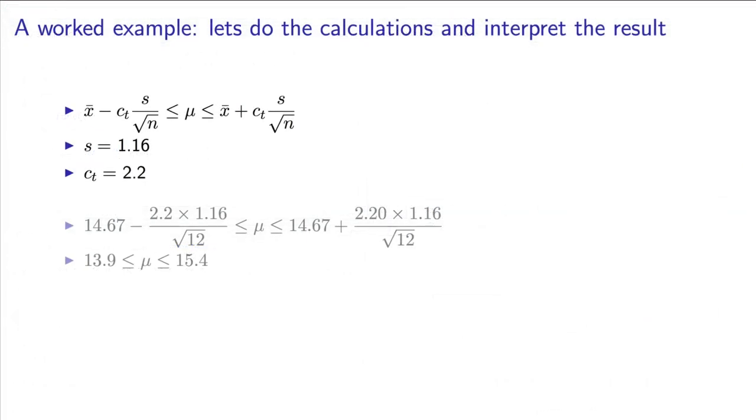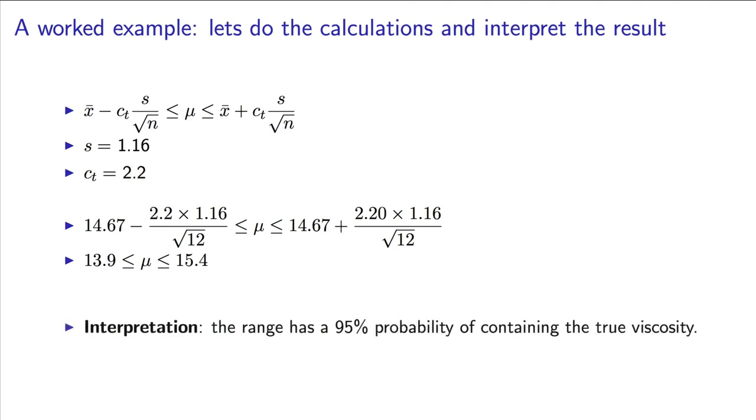Substituting all our known values gives a lower bound of 13.9 and an upper bound of 15.4. To interpret this for our manager would be to say that the range from 13.9 to 15.4 has a 95% chance of containing the true viscosity from the batch process. If we took 100 groups of 12 samples, 95 of those groups would have calculated bounds that included the true viscosity.